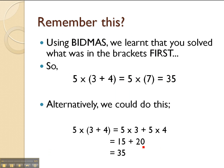Now you probably remember this from earlier in the year. When we were doing BIDMAS we learned that you first solved what was inside the brackets. So if we look at this equation, we've got 5 times in brackets 3 plus 4. Using BIDMAS we'd solve the brackets first. 3 plus 4 is equal to 7, so 5 times 7 equals 35. That's nice and straightforward.